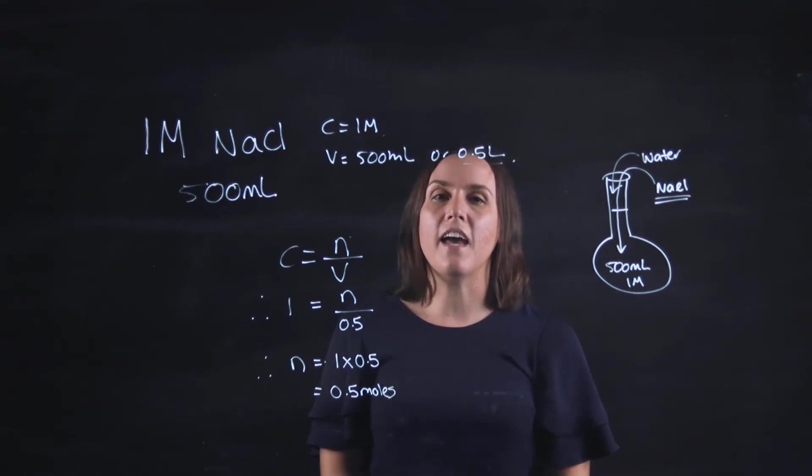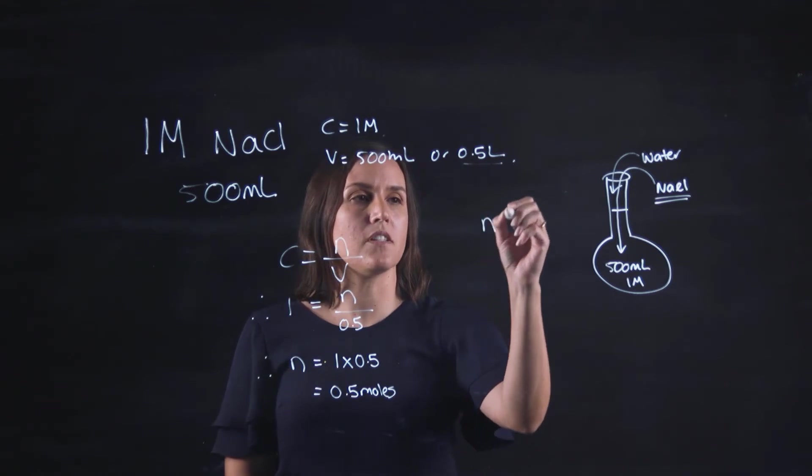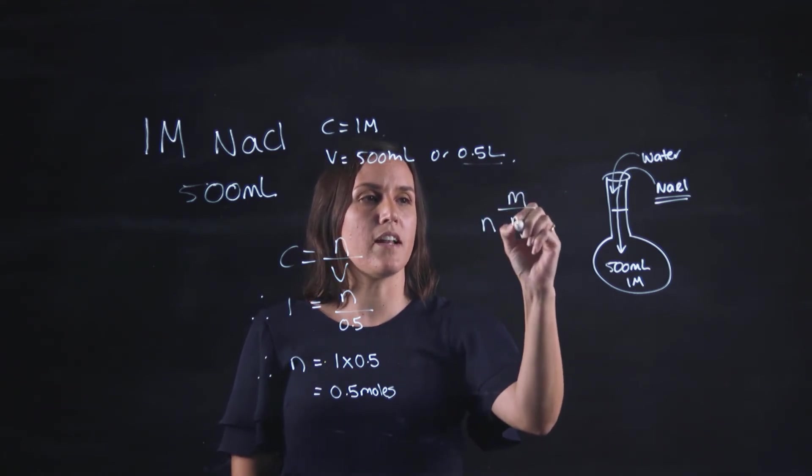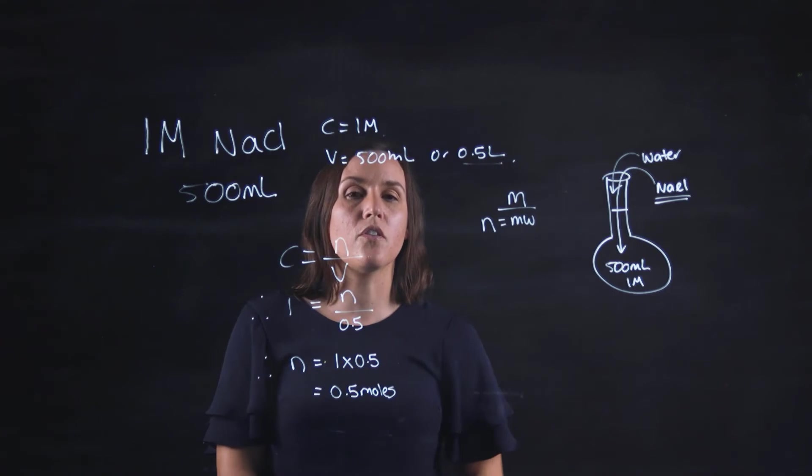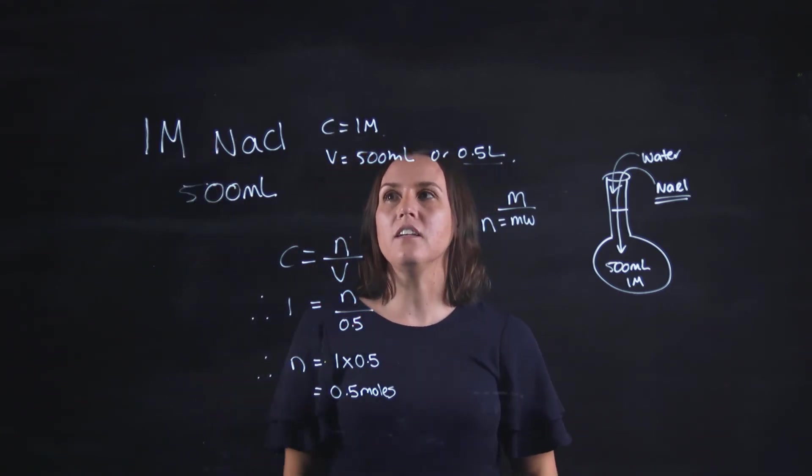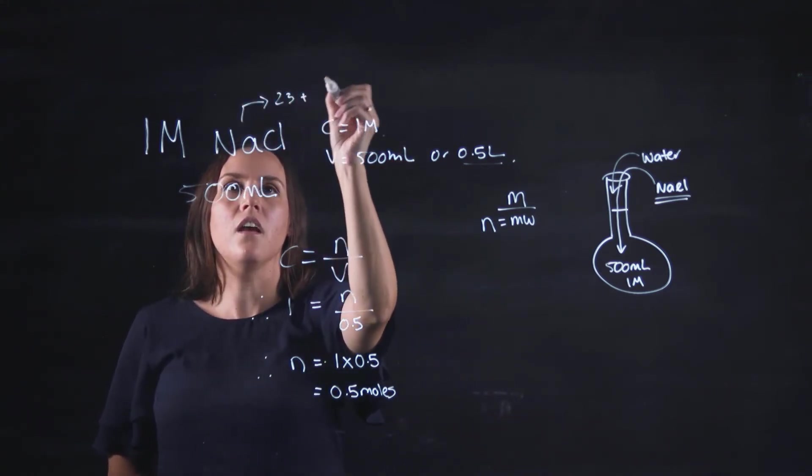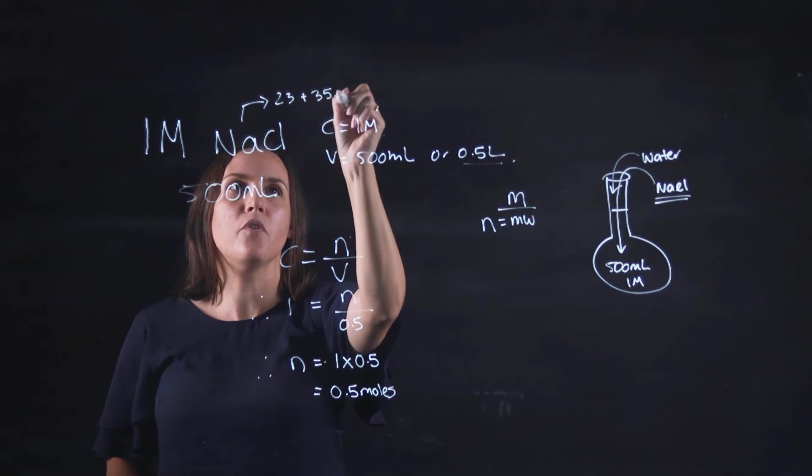Now to work that out I then go into my other equation where I have the number of moles is the mass divided by the molecular weight or the molar mass. So the molecular weight for sodium chloride: sodium is 23 and chloride is 35.5.